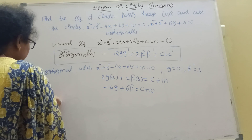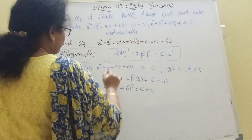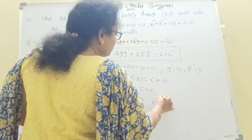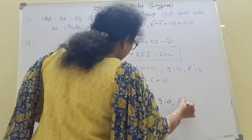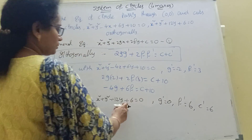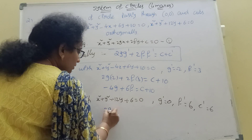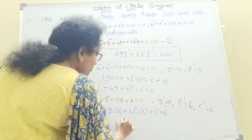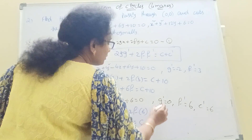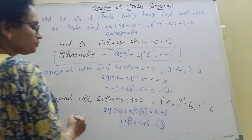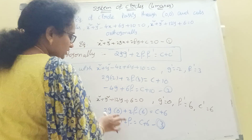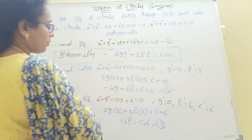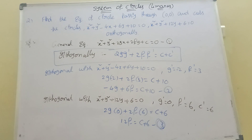The second orthogonal condition with circle x² + y² + 12y + 6 = 0. Here g' = 0, f' = 6, c' = 6. Applying: 2g·0 + 2f·6 = c + 6. So 12f = c + 6. Solving simultaneously: from these two equations, we get 12f = c + 6, and substituting into the first equation to find the values of f and c.